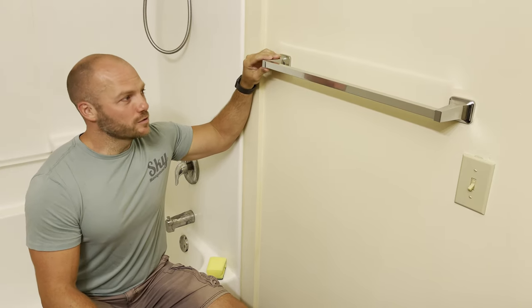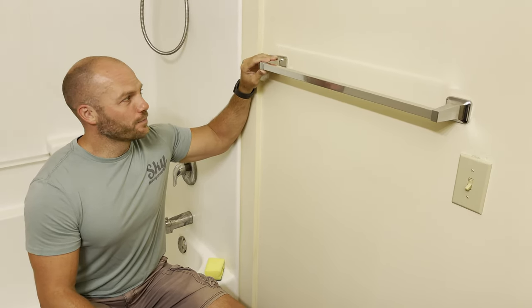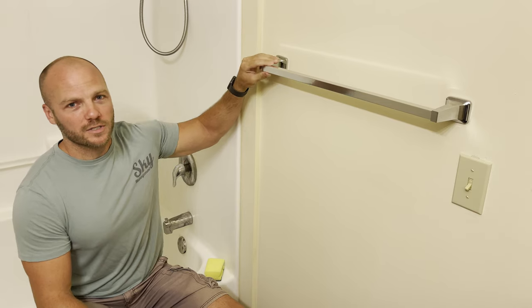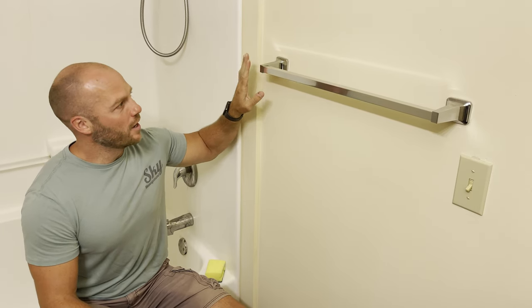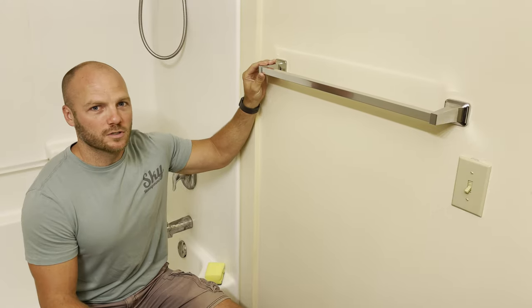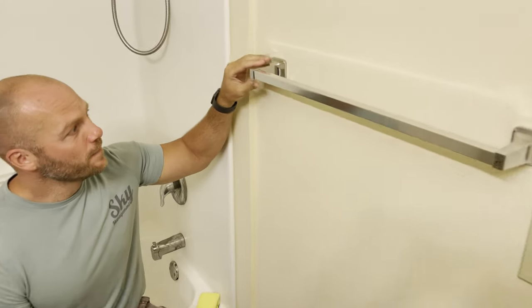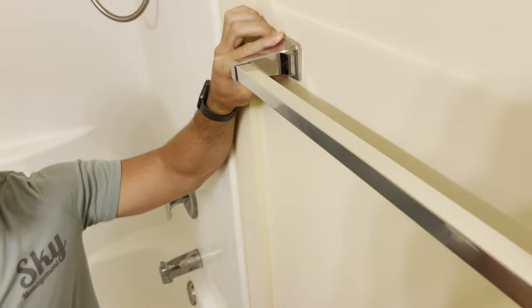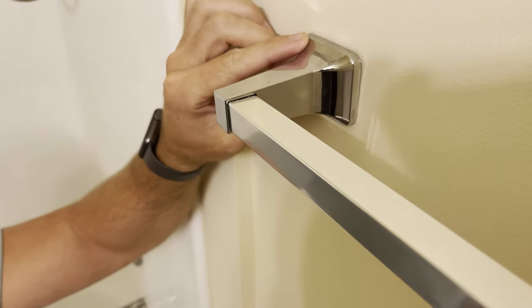Today we have a towel rack that is loose like this. This is pretty common, especially in apartments but in people's homes as well. This is a really common towel rack, this is one of the inexpensive versions that you can get at Lowe's or on Amazon. There's a couple different things you can do to try to fix this.